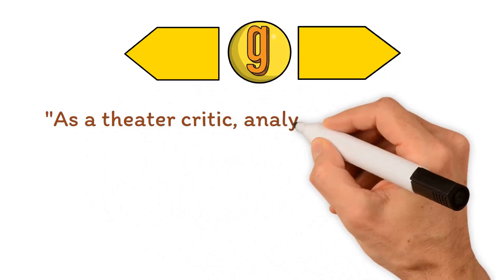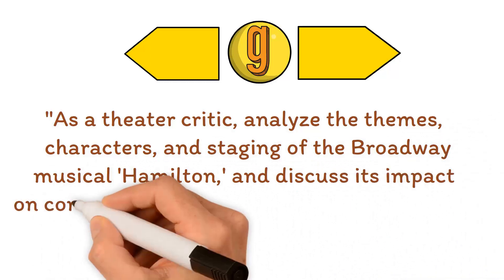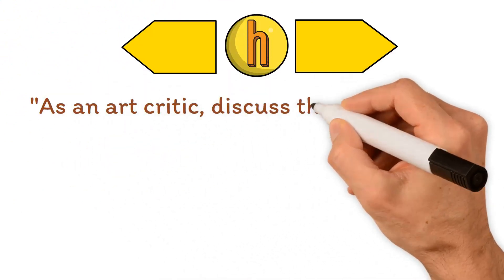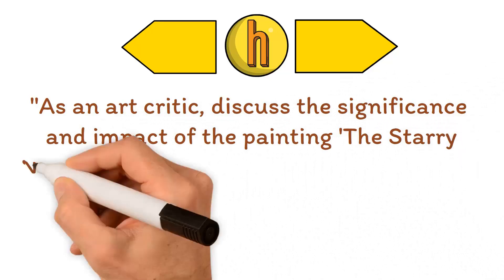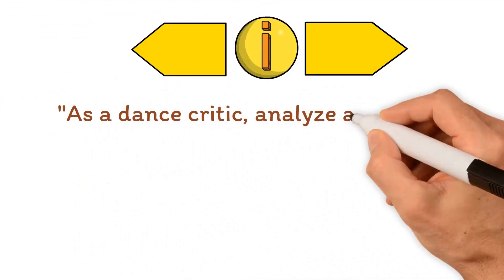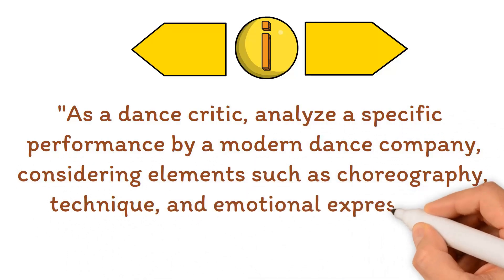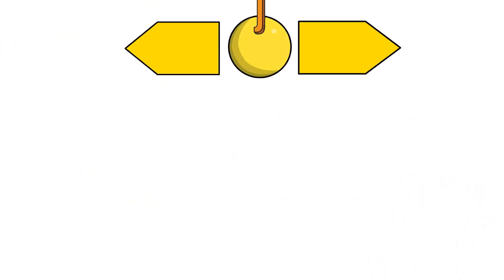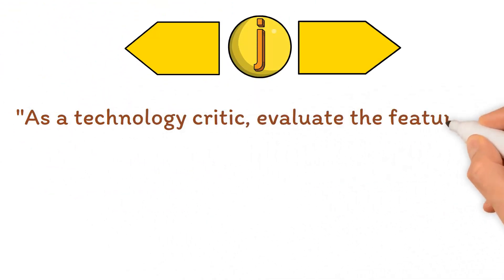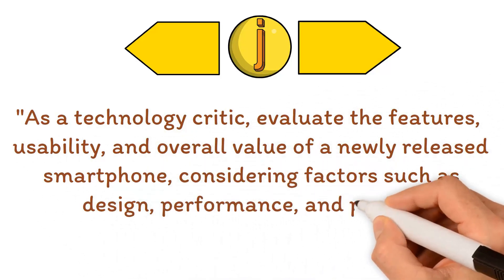G. As a theater critic, analyze the themes, characters, and staging of the Broadway musical Hamilton, and discuss its impact on contemporary theater and popular culture. H. As an art critic, discuss the significance and impact of the painting Starry Night by Vincent van Gogh, considering its composition, the use of color, and emotional resonance. I. As a dance critic, analyze a specific performance by a modern dance company, considering elements such as choreography, technique, and emotional expression. J. As a technology critic, evaluate the features, usability, and overall value of a newly released smartphone, considering factors such as design, performance, and price.